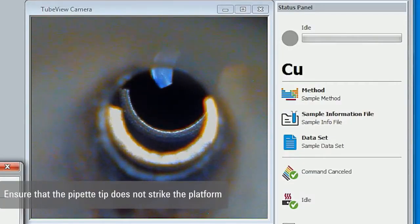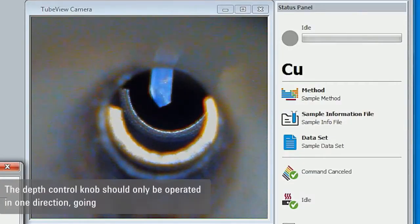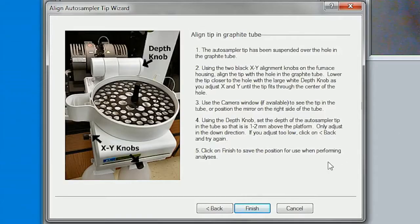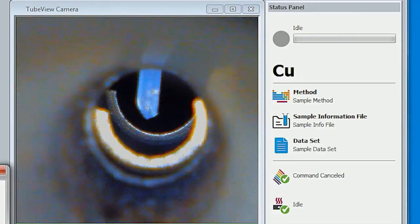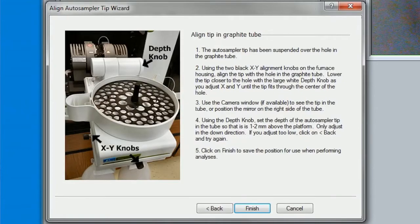Use the tube view window in the software to see the location of the tip inside the graphite tube. Use the depth knob to position the tip one or two millimeters above the platform. If you adjust too low, click back and try again. Click finish to save the position.